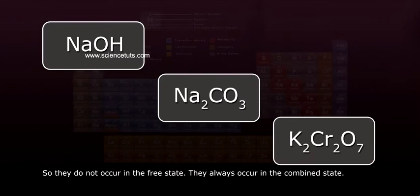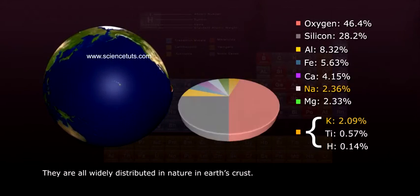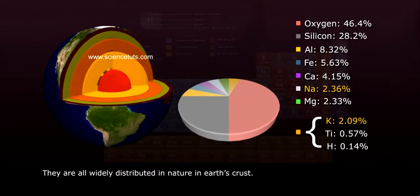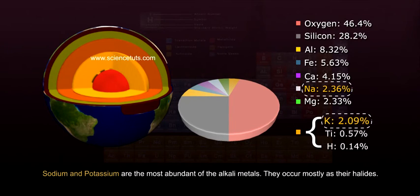They always occur in the combined state. They are widely distributed in nature in Earth's crust. Sodium and potassium are the most abundant of the alkali metals. They occur mostly as their halides.